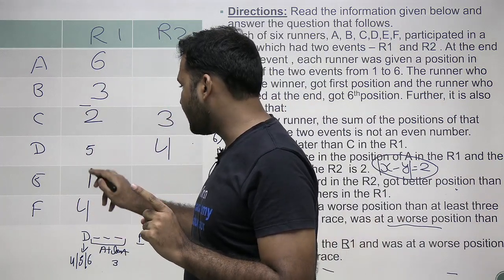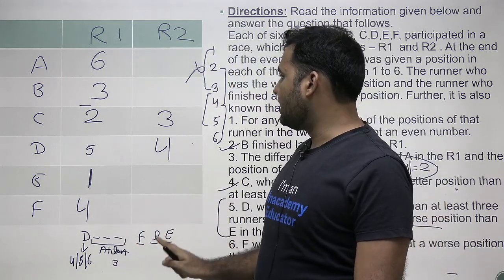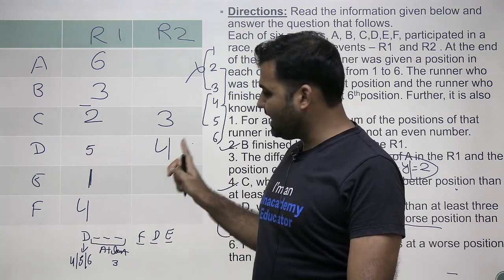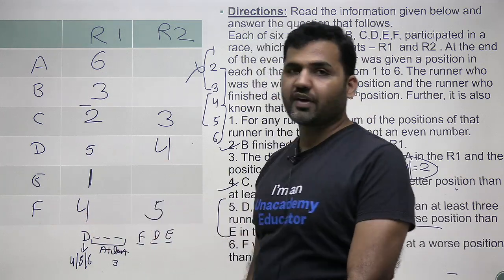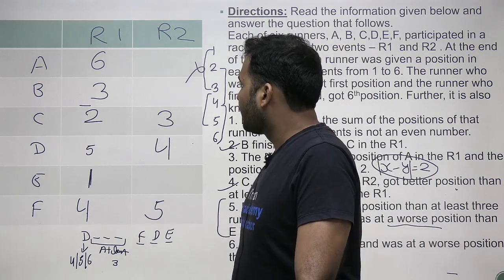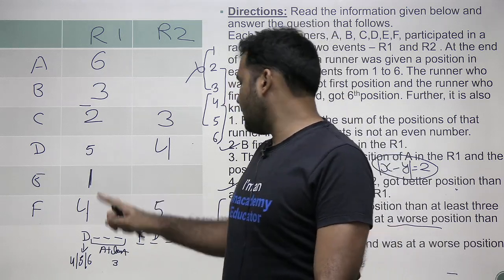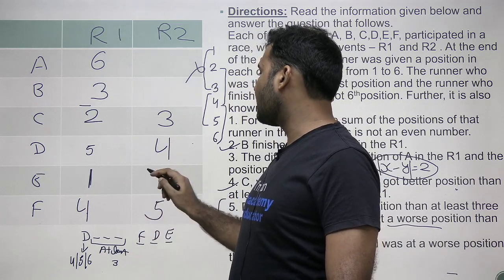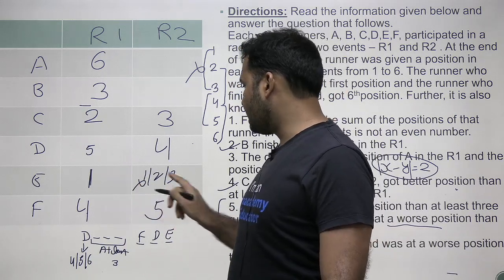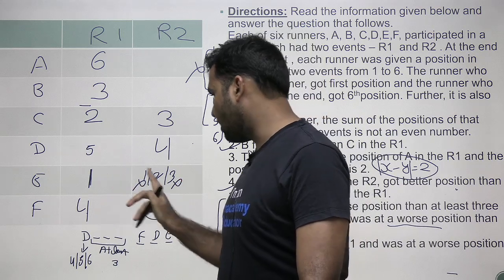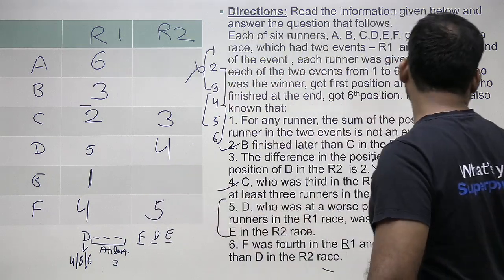With ranks 2, 3, 4, 5, 6 assigned in R1, the only rank left is 1 — so A gets rank 1 in R1. Now for E's rank in R2: E must finish before D, whose R2 rank is 4. The possible ranks are 1, 2, or 3. Rank 1 is taken; 1 plus 1 equals 2 (even) — eliminated. Rank 3: 3 plus... checking parity constraint, 3 is eliminated. So the only option for E in R2 is rank 2.